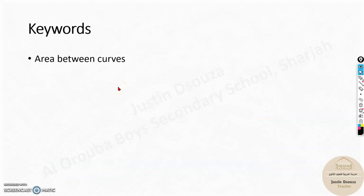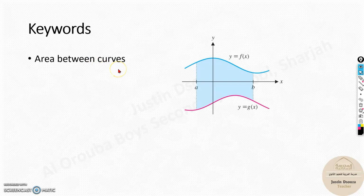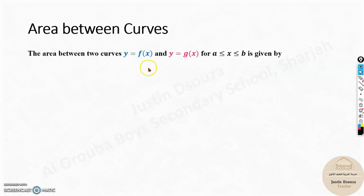The key word in this lesson is Area Between Curves. This is the upper function, this is the lower function, and you need to find the area between them. Before we start with the problems, let's quickly see what it means — the area between curves.